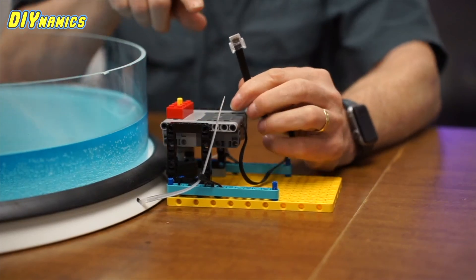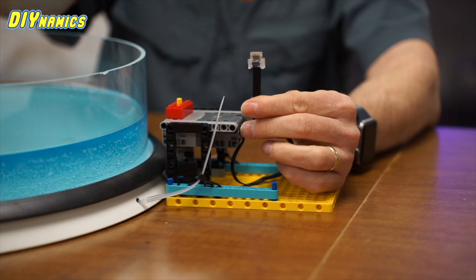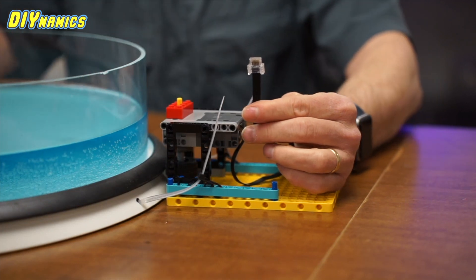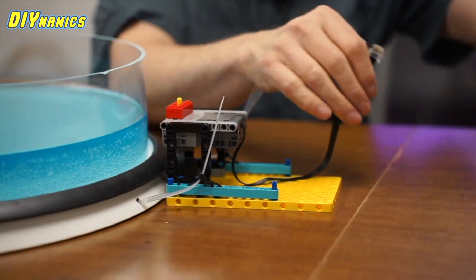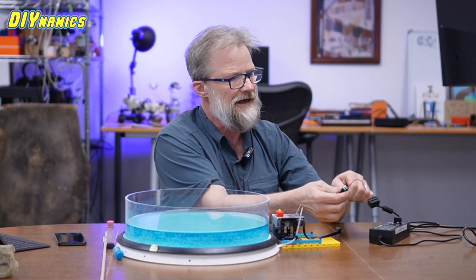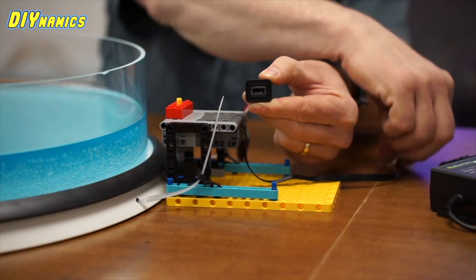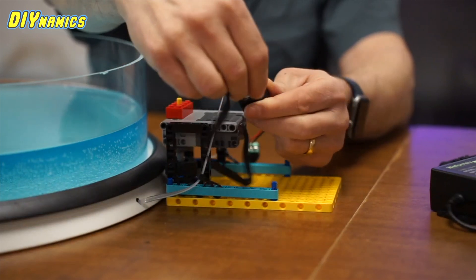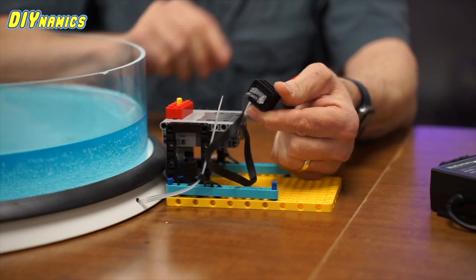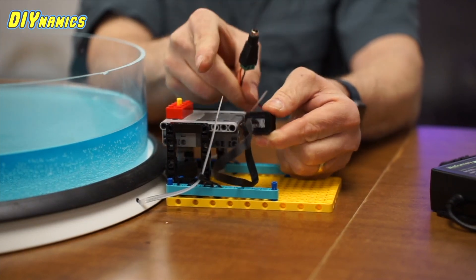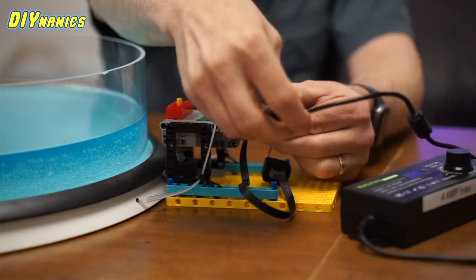Instead of cutting this wire and using alligator clips to connect it to a power supply, what we did is designed a 3D printed adapter. We can plug the Lego motor connector in, and then on the other side of that we've got the right jack for our power supply.